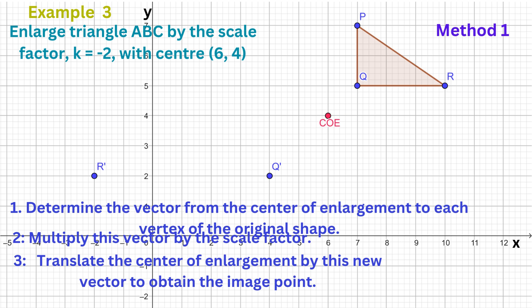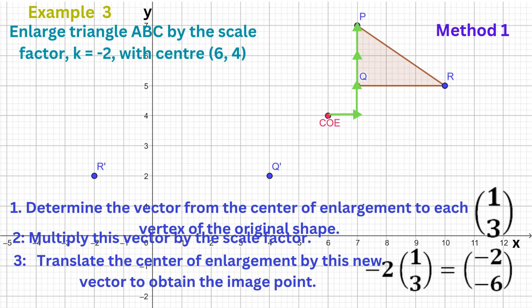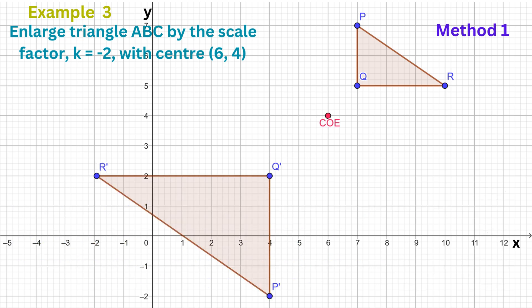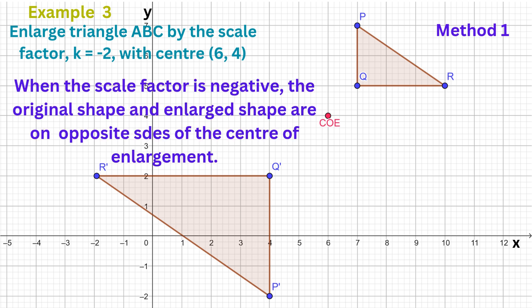To get from the centre of the enlargement to vertex P, we move one unit to the right then three units up — that's the vector (1, 3). Multiply this vector by the scale factor -2, and we get (-2, -6), which means that to get from the centre of the enlargement to the image of P, we move two units to the left and six units down. Connect the image points and we have our enlarged shape. Notice that the original shape and the enlarged shape are on opposite sides of the centre of enlargement, with the image flipped upside down. This is usually the case when the scale factor is negative.